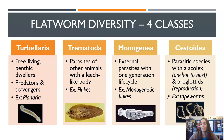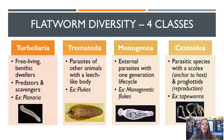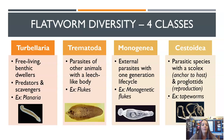In terms of flatworm diversity, there are four classes you need to know. First is class Turbellaria — these are the free-living, non-parasitic ones, like the planaria we just saw. They are typically either predators or scavengers. Class Trematoda are parasites of other animals and look more like leeches, although leeches are not flatworms. An example would be a fluke, like liver flukes, which are really common.